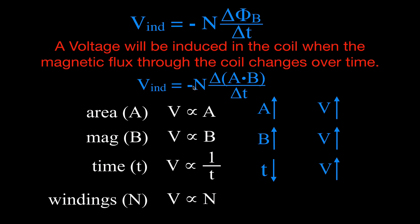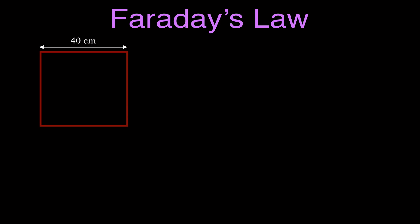Also, the windings — N is a multiplier out front, so there's a direct relationship between the number of windings and the induced voltage. You should know this relationship for each of the factors that affect the magnitude of the induced voltage. Now I'm going to go through, for each condition — magnetic field strength, area, time, and number of windings — a little explanation, an example, and calculate how we would calculate the induced voltage using Faraday's Law.